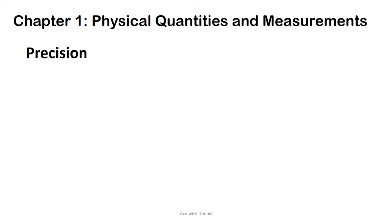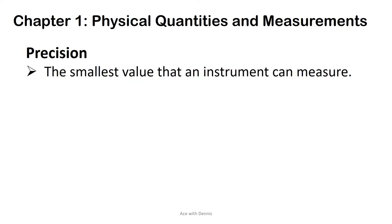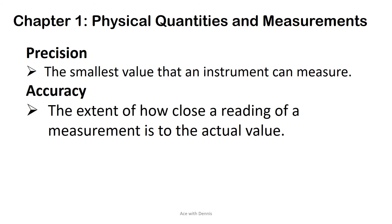Precision: The smallest value that an instrument can measure. Accuracy: The extent of how close a reading of a measurement is to the actual value.